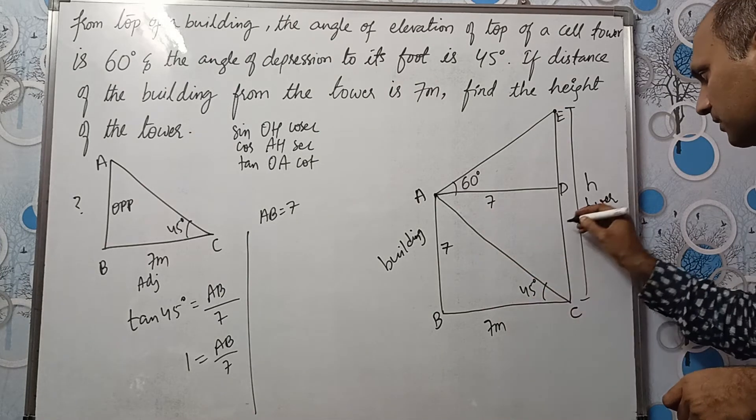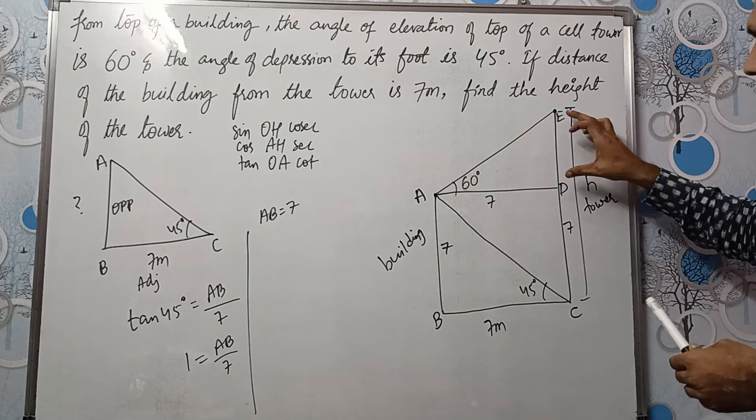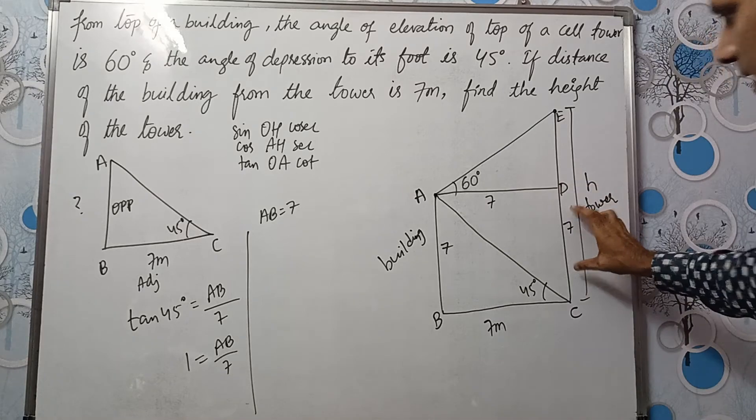So height of the building is 7. So if this is 7, this is also 7. DC will be 7. Let us take this triangle E, D, A and find the value of ED and then add it to 7.